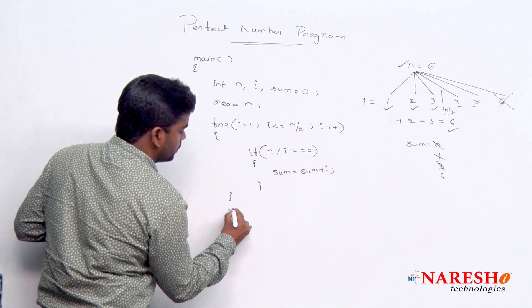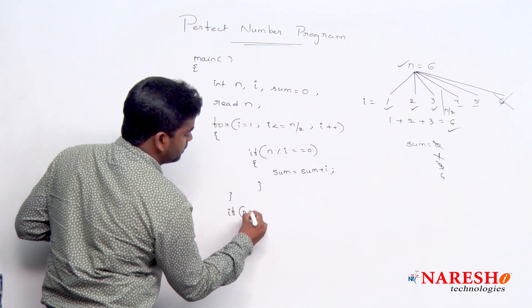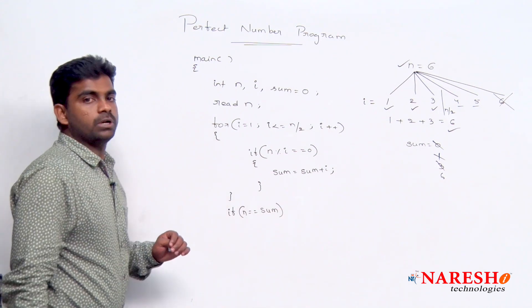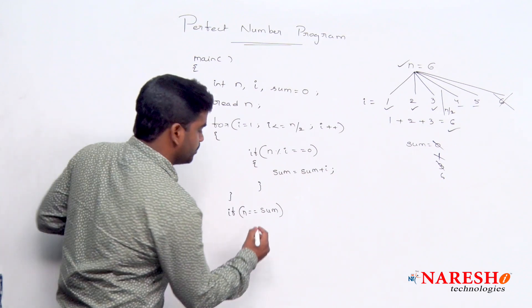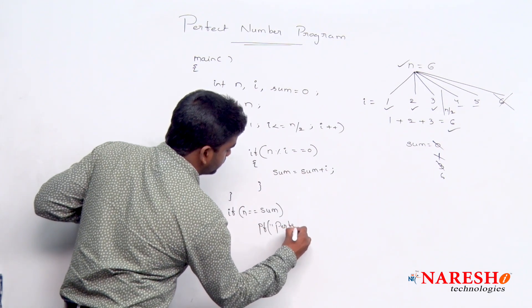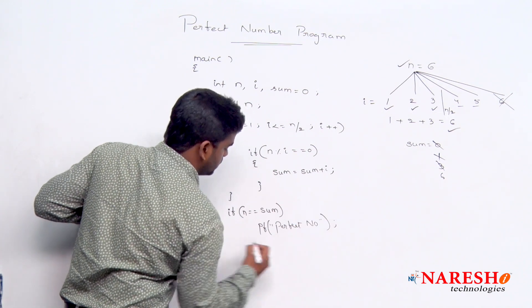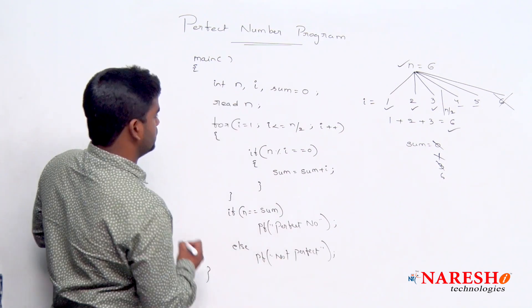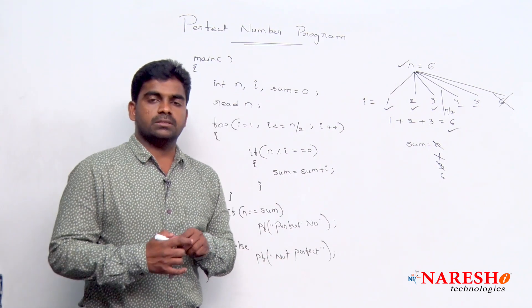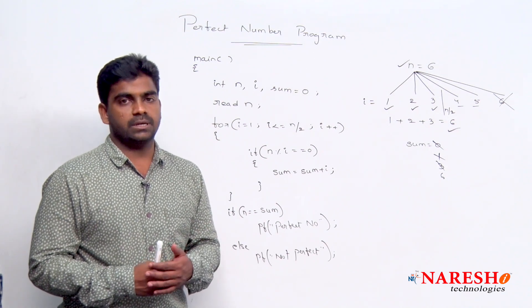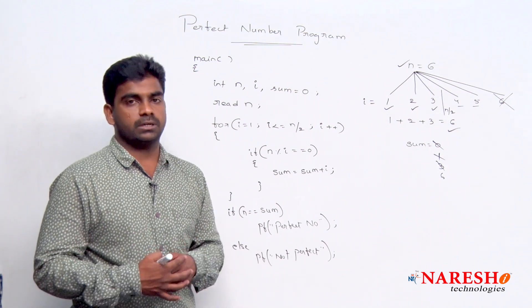So finally, we are checking if the number what they have given is equal to that sum what we found. If both are equal, then we can say that it is a perfect number, else not perfect. This is the code, the simple code, to test if the input number is a perfect number or not.